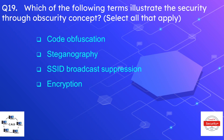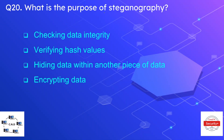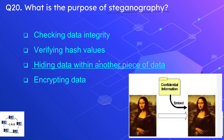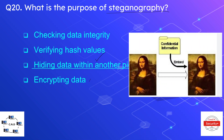Question number nineteen: which of the following terms relate to the concept of security through obscurity? Select all that apply. The options are code obfuscation, steganography, SSID broadcast suppression, and encryption. The correct options are code obfuscation, steganography, and SSID broadcast suppression. Question number twenty: what is the purpose of steganography? The correct option is hiding data within another piece of data — for example, hiding data inside a picture.